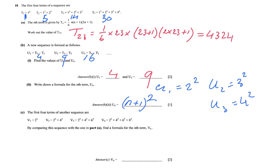Now we continue for two points — the last question. The first four terms of another sequence: V1 = 2 squared, V2 = 2 squared plus 4 squared, V3 = 2 squared plus 4 squared plus 6 squared, V4 = 2 squared plus 4 squared plus 6 squared plus 8 squared. We have to compare this sequence with the one in part A and find the formula for the nth term Vn.